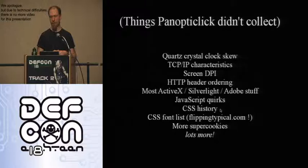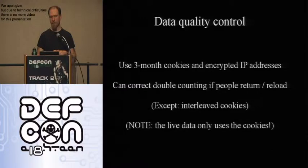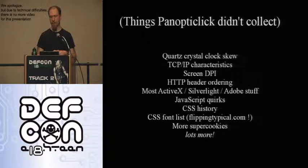Some of those things we didn't collect because we didn't have time to implement them; some we didn't know about until we put the site up and received emails saying you could also collect this. And some things, like CSS history detection, we weren't sure would be stable enough to include in a fingerprint without fuzzy matching code that we didn't have. The key point is that all our results should be taken as an optimistic story about how much privacy you have. With a really good fingerprint, it would be more powerful and more revealing.